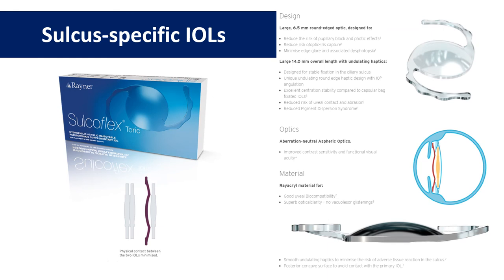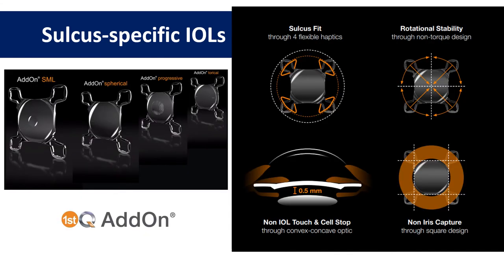Moving on to the sulcus-specific lenses: the Sulcoflex from Rayner has been around for quite a while and is now available in a multifocal option. It's a hydrophilic acrylic with a 6.5mm optic and a large 14mm haptic diameter, and the haptics are specially designed to promote stability, create a decent interlenticular space, and reduce pigment dispersion. The add-on from FirstQ has a slightly different design but has similarly been engineered to optimize stability, reduce lens touch and pigment dispersion.